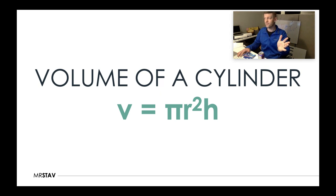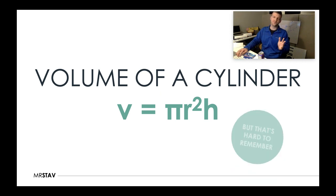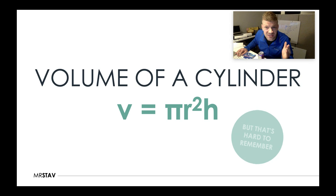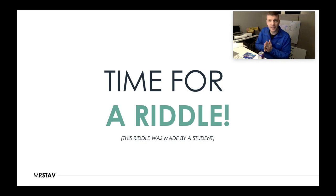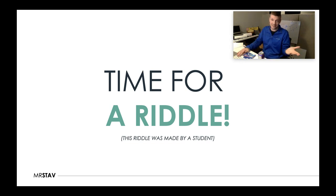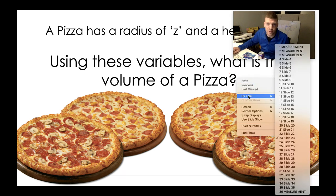That's kind of hard to remember. I know that by the time I give you a really hard test, you'll have forgotten this formula. So I actually have a riddle for you from a past student. Did I ever mention to I like pizza? I do. So here's a pizza question. A pizza has a radius of z and a height of a. Use these variables and figure out the volume of a pizza.